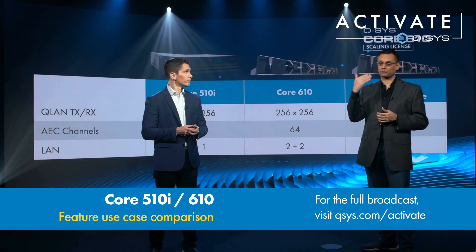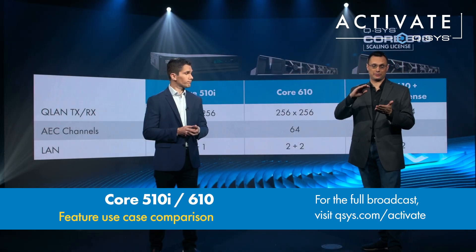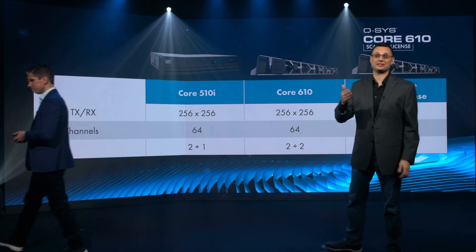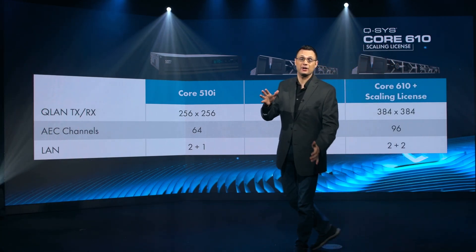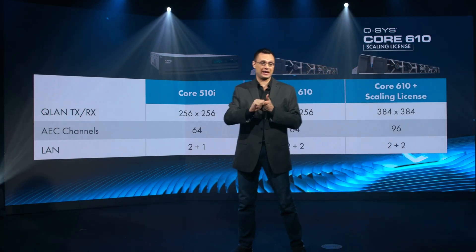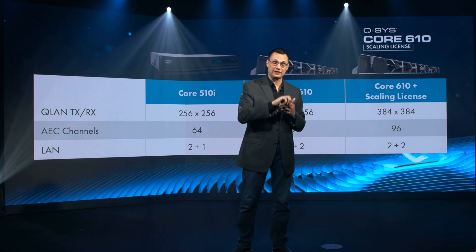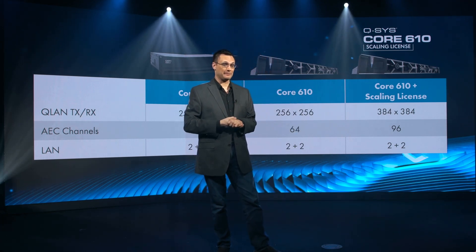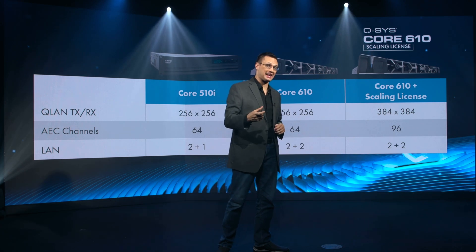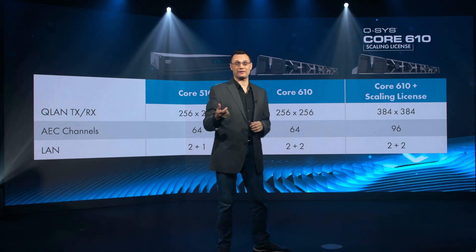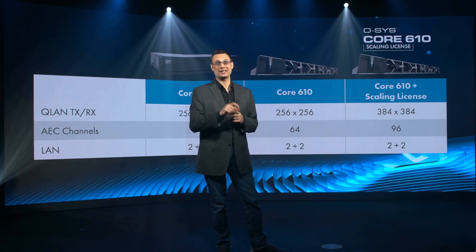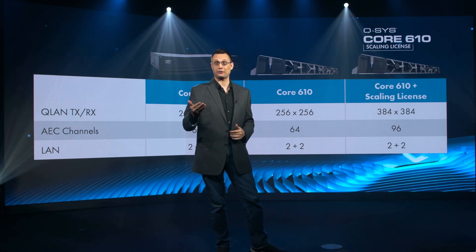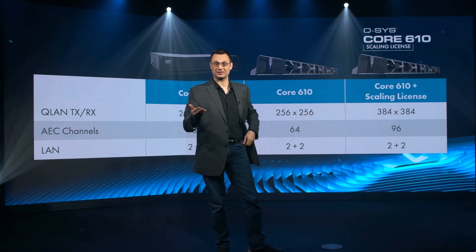If you want to talk about pure processing power and pure network audio channel count, the 510 and the 610 are essentially the same. The 610 and the 510 have the same number of network audio channels that you can carry — the QLAN channels. You can actually expand the number of AEC channels and QLAN channels that the 610 can process if you apply the software feature license that's part of it.